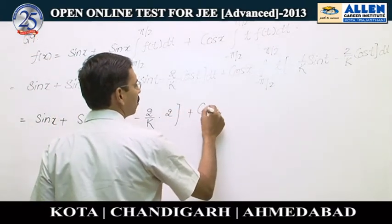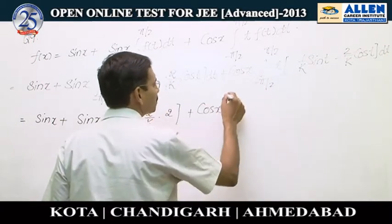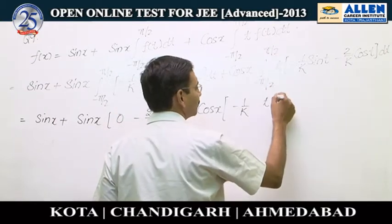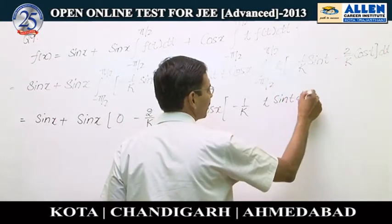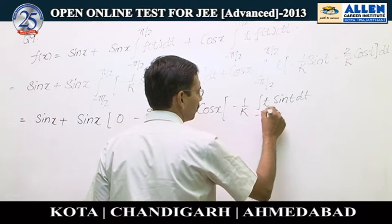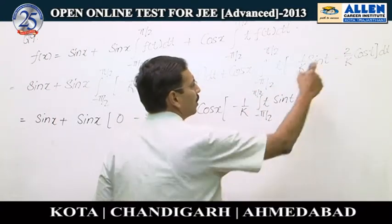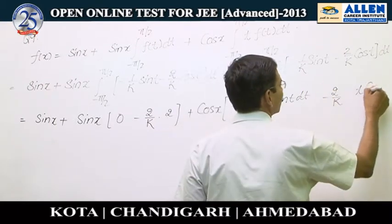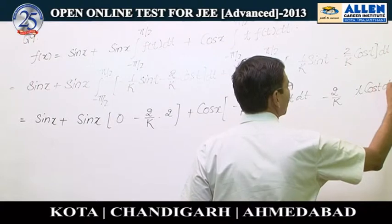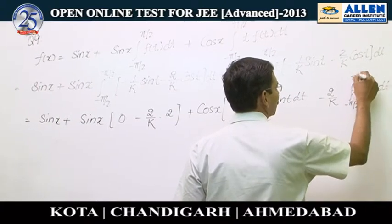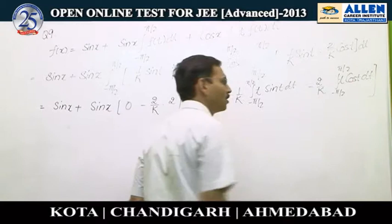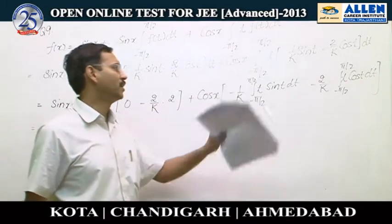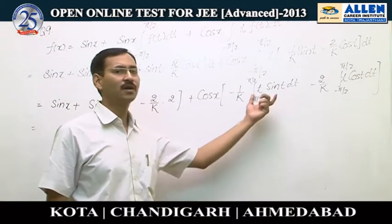Then plus cos x times: the first term is minus 1 upon k — taking the constant outside — the integral of sin t from -π/2 to π/2, which is an odd function so its value is 0. And minus 2 upon k times the integral of t·cos t from -π/2 to π/2. This is also an odd function, so the value will be 0, and when we integrate this by parts, this value also comes to be 2.